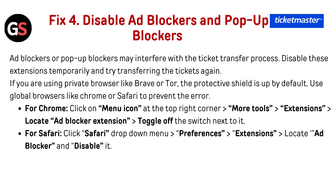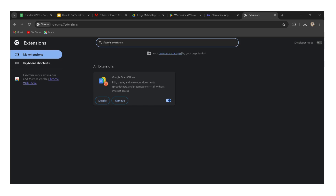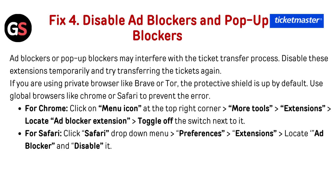Fix four: disable ad blockers and pop-up blockers. Ad blockers or pop-up blockers may interfere with the ticket transfer process. Disable these extensions temporarily and try transferring the tickets again. If you are using a private browser like Brave or Tor, the protective shield is up by default — use standard browsers like Chrome or Safari to prevent errors. For Chrome: click the menu icon, go to More Tools, then Extensions, locate the ad blocker extension, and toggle off the switch. For Safari: go to Safari drop-down menu, Preferences, Extensions, locate ad blockers and disable it.